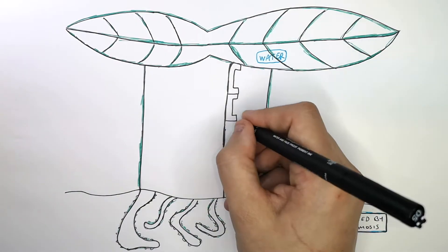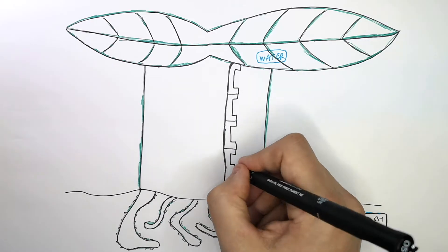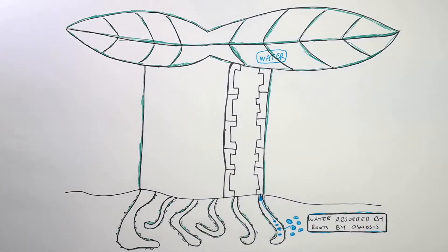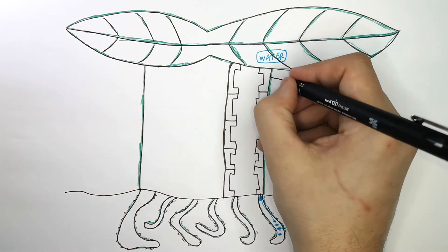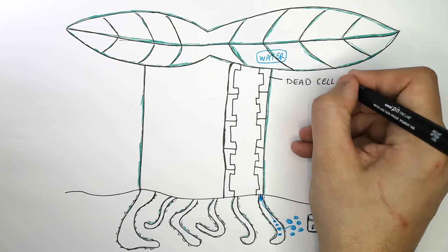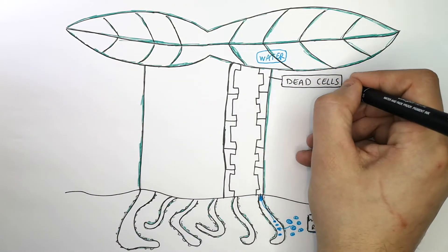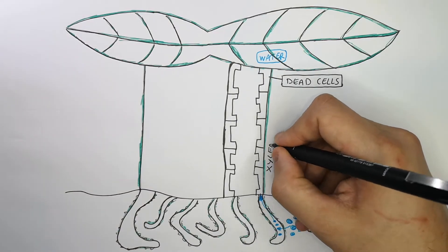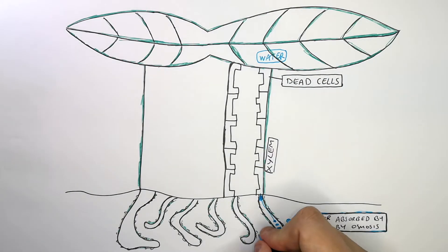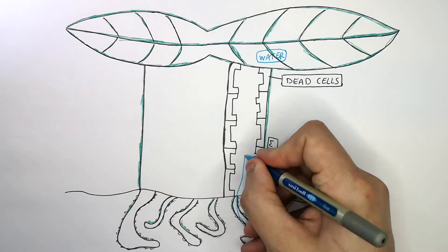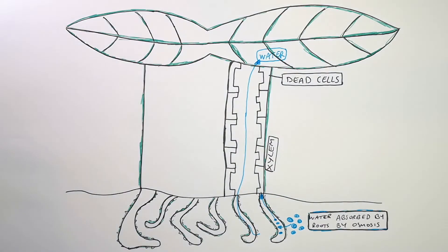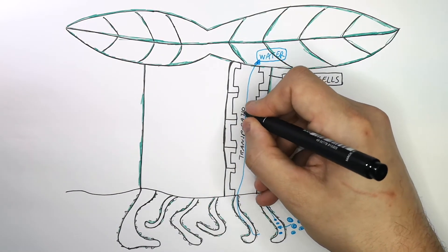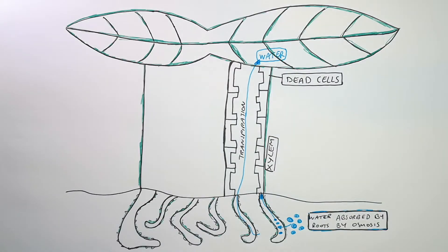The xylem is the tissue within a plant that transports water from the roots to the leaves via transpiration. What I'm drawing now is the xylem cells. The xylem cells are dead cells — they are dead hollow cells. These dead cells that are hollow form the xylem. The xylem is where water is transported from the roots to the leaves via the process of transpiration.